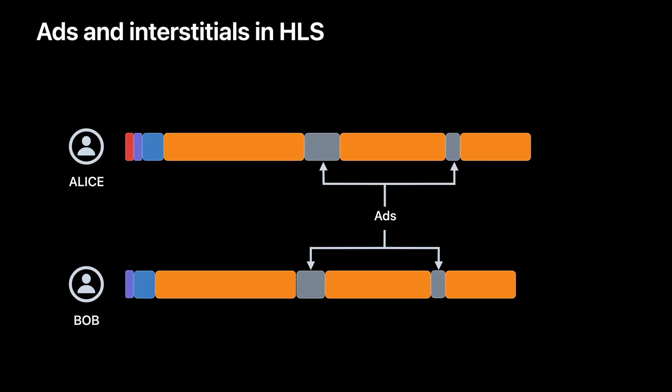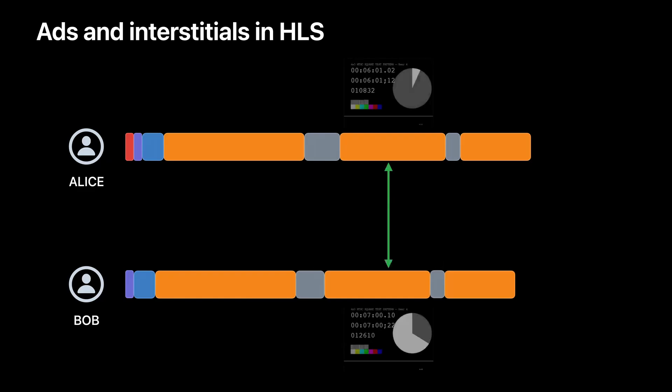But now, let's say Alice's geography requires that the server shows some statutory warnings before the start of the program. And there might also be ads scheduled at different points within the program, and it could be that these ads are of different durations. We can now see how this might pose a challenge when trying to get them to play in sync. For Bob, the network banner might appear at the very beginning, but for Alice, it will appear only after the warnings are shown. And if we were to look at some arbitrary time in the presentation timeline, they will be watching completely different portions of the content.